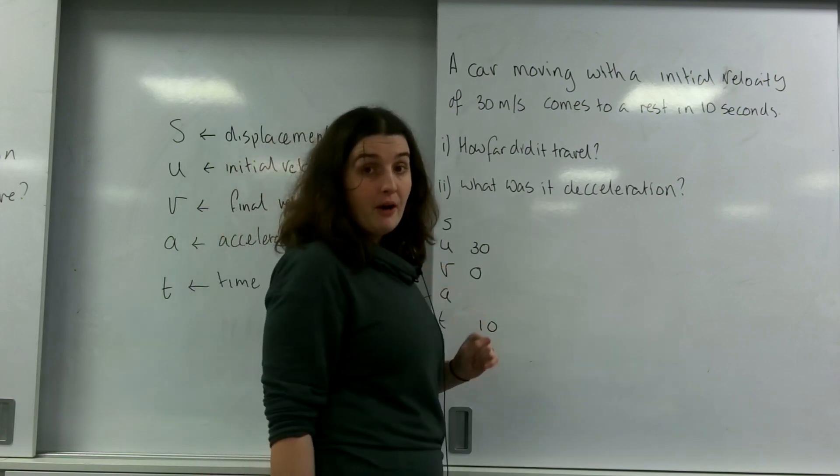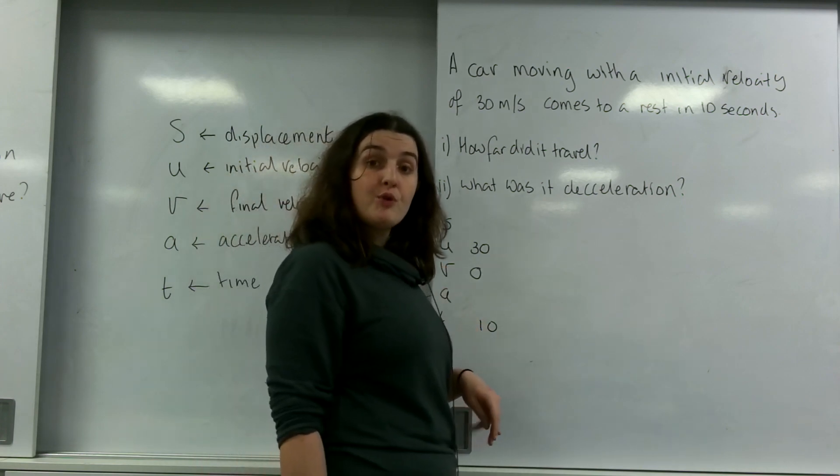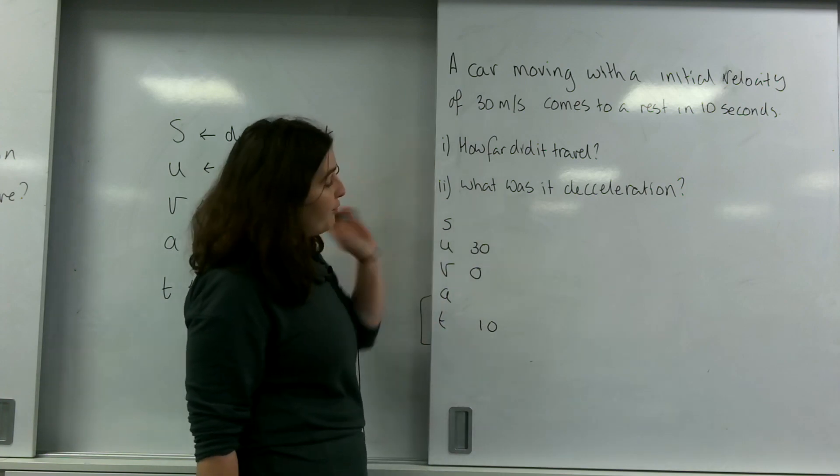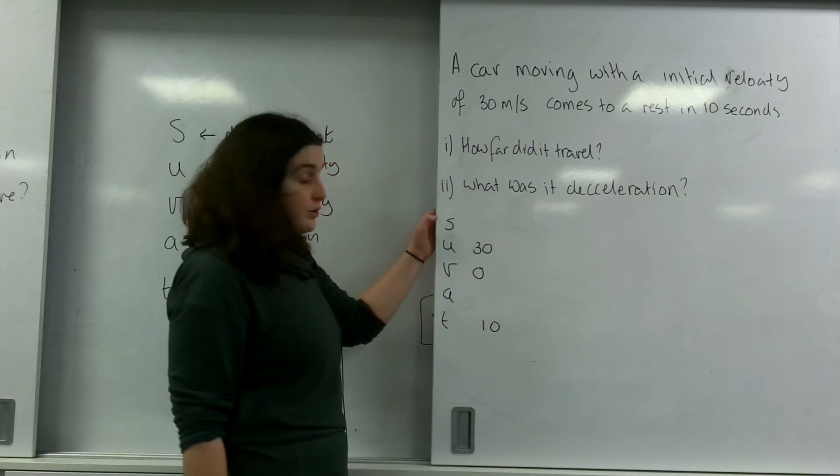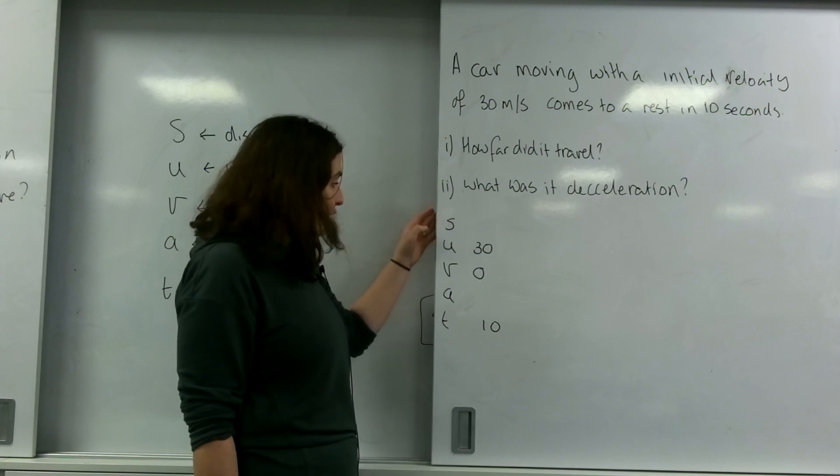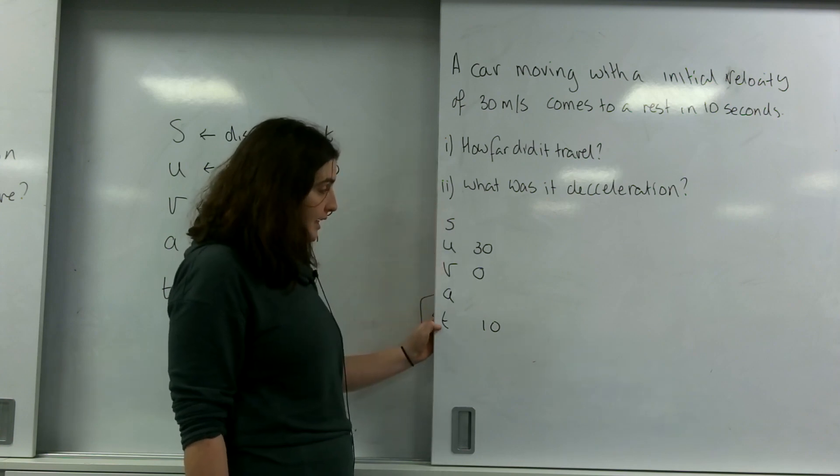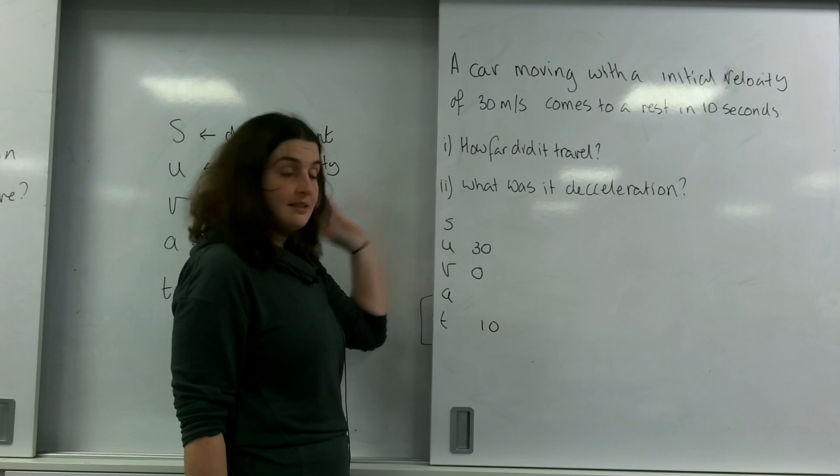Now, you would need at least three parts of the SUVAT to be able to solve a fourth. So how far did it travel? I want to find S. I know U, V and T, and I want to find S.